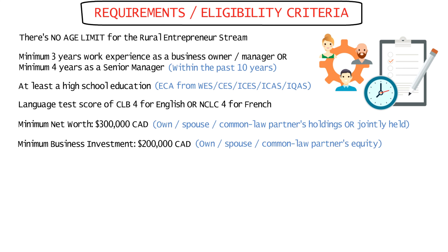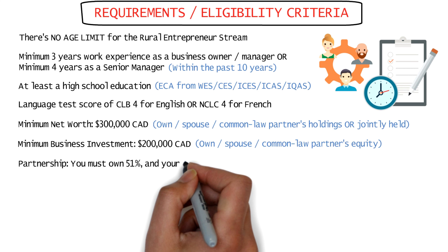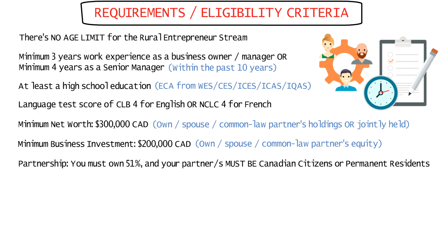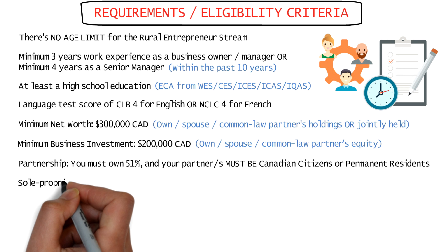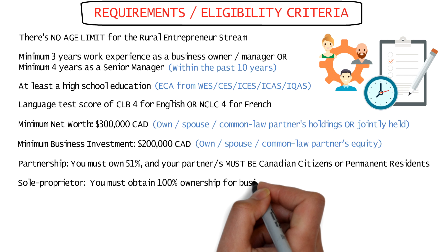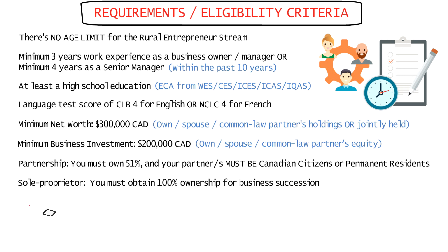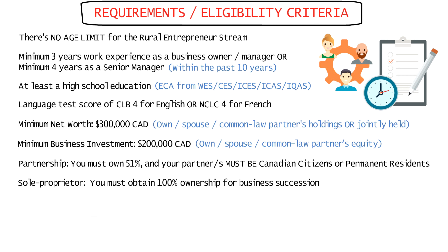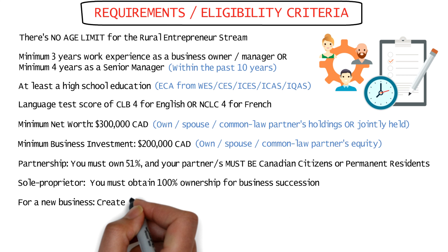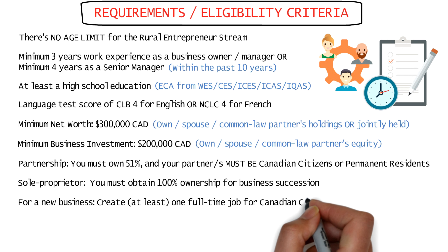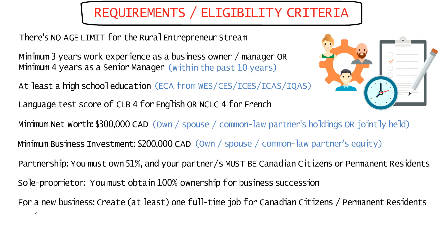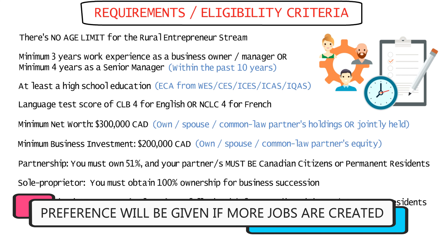If you decide to go with a partnership business model, you must own at least 51% of the business and your partner or partners must be Canadian citizens or permanent residents. If you decide to go for a sole proprietor business model, you must obtain 100% ownership. For business succession, there must be a complete change in ownership where the candidate will assume full control. If you're creating a business, you must create at least one full-time job for Canadian citizens or permanent residents — you cannot employ your relatives for these positions. The more jobs you create, the better your chances.